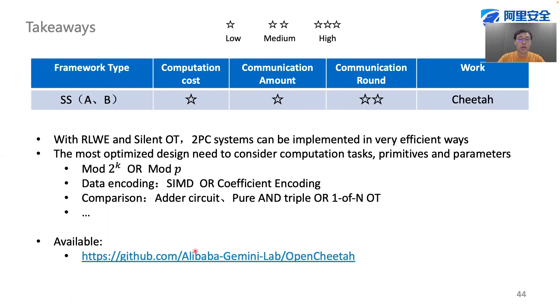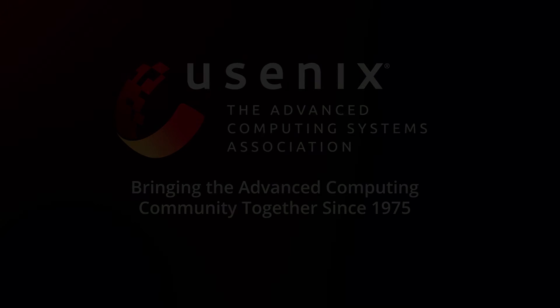To summarize, with BFV homomorphic encryption and silent OT, 2PC computation systems can be implemented in very efficient ways. The most optimized design needs to take multiple factors into account, such as the computation tasks, the primitives, and the parameters. Our system is open source on GitHub, and welcome to try Chita. Thank you.